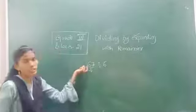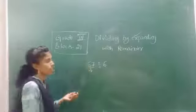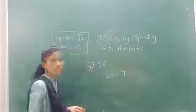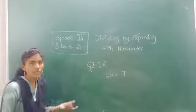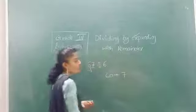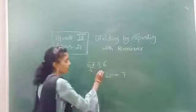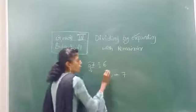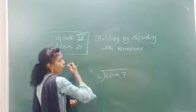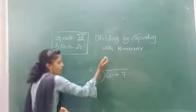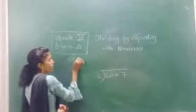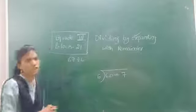What is the expansion form for 67, children? 60 plus 7. What is the expansion form? 60 plus 7. So you write the expansion form, and then what do you have to do? You have to take the 6 and keep it on the outside of the dividend. So, 67 is divided by 6 using the expansion method.